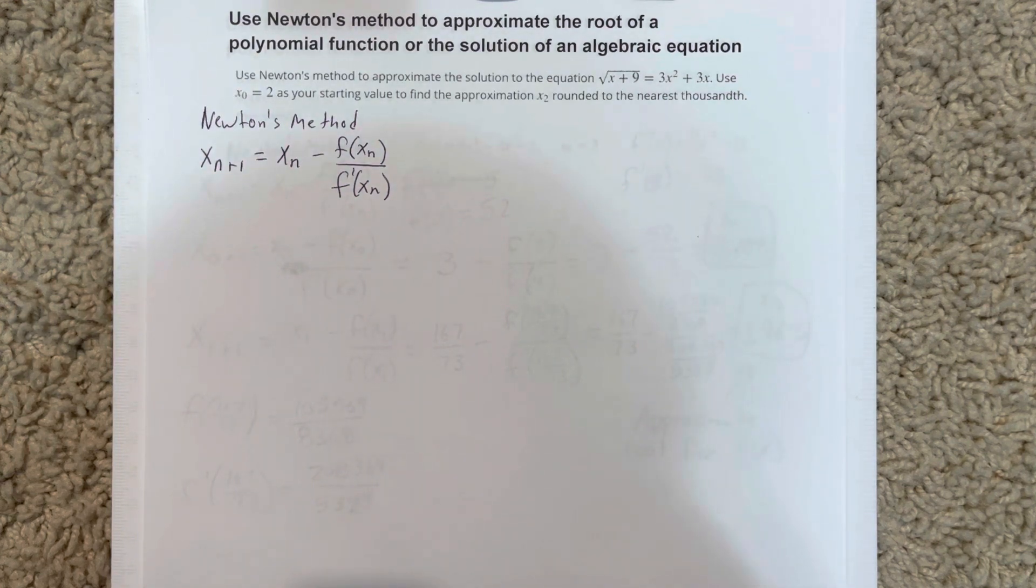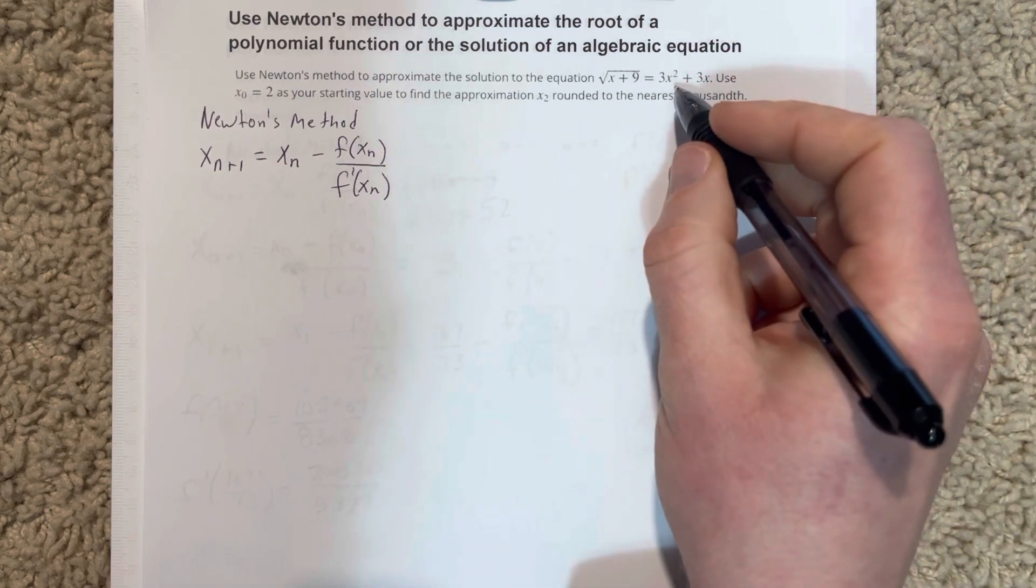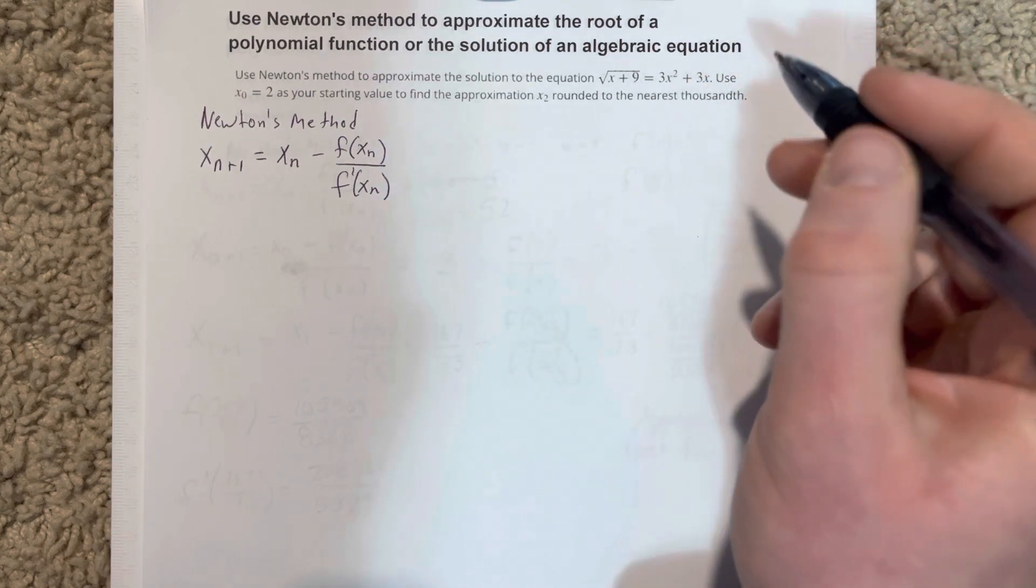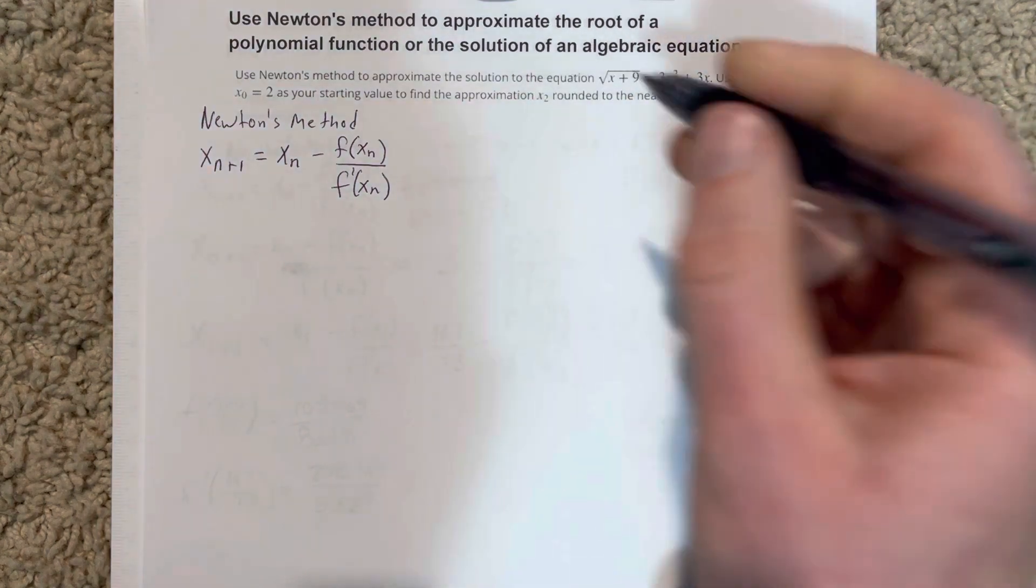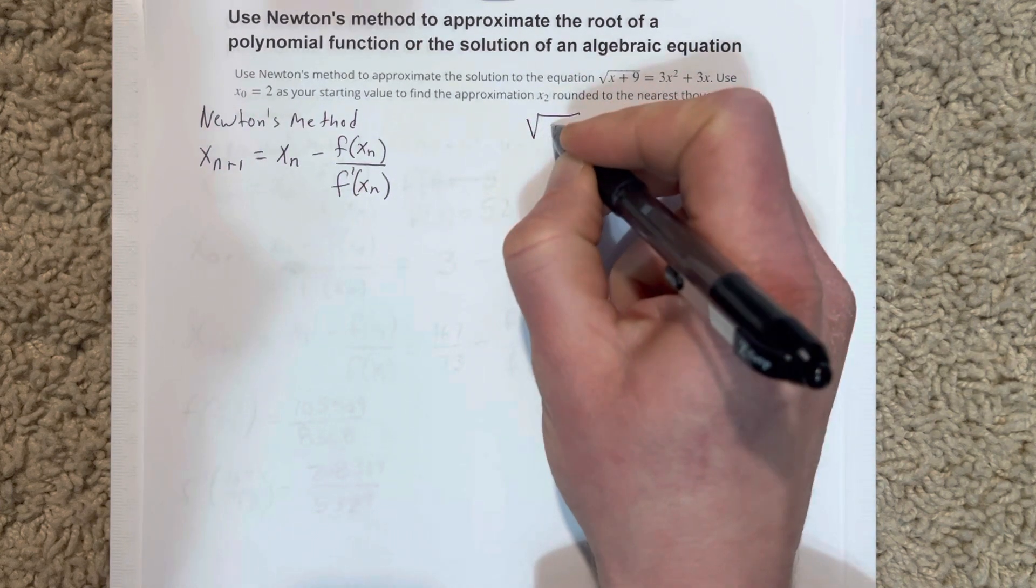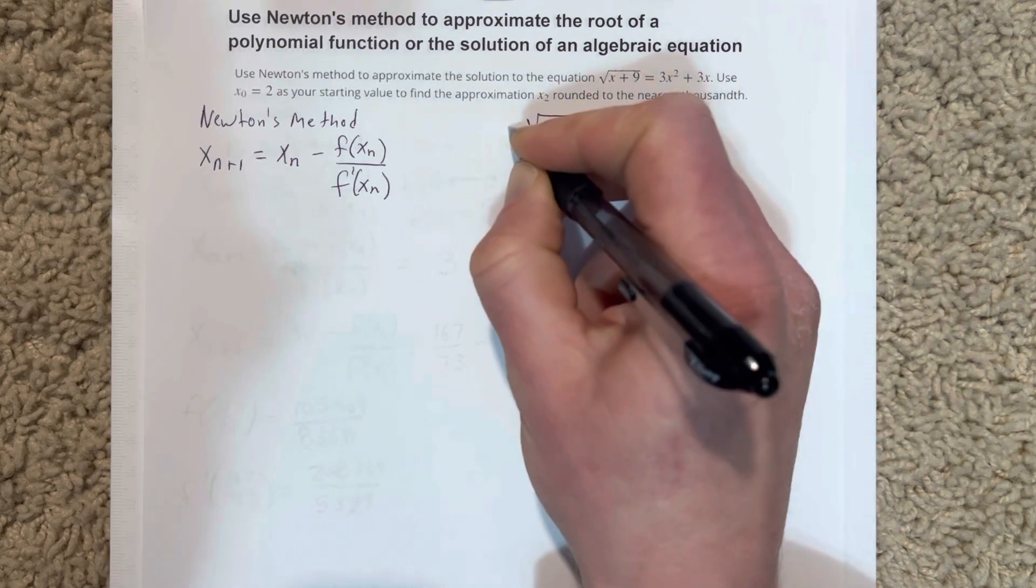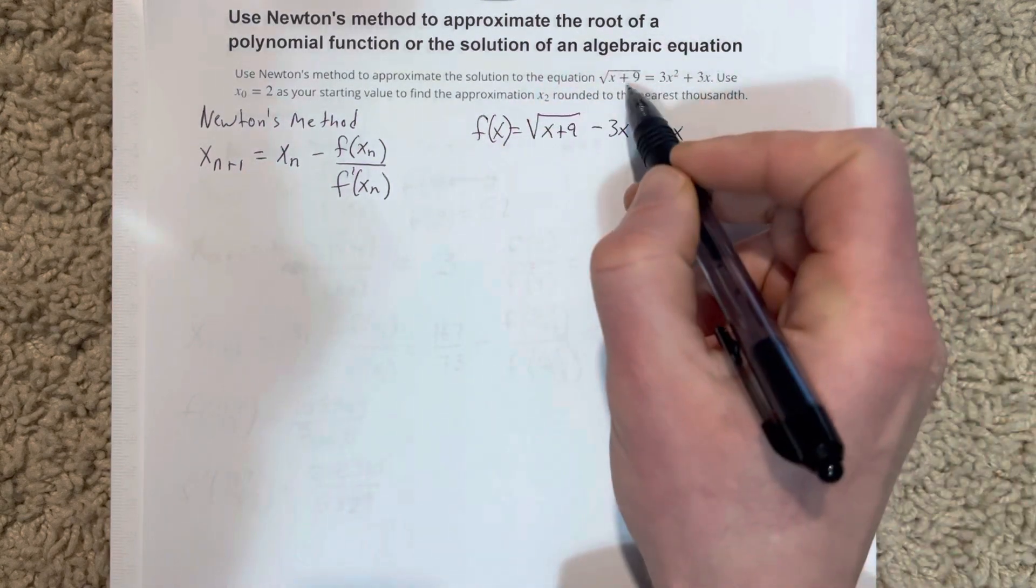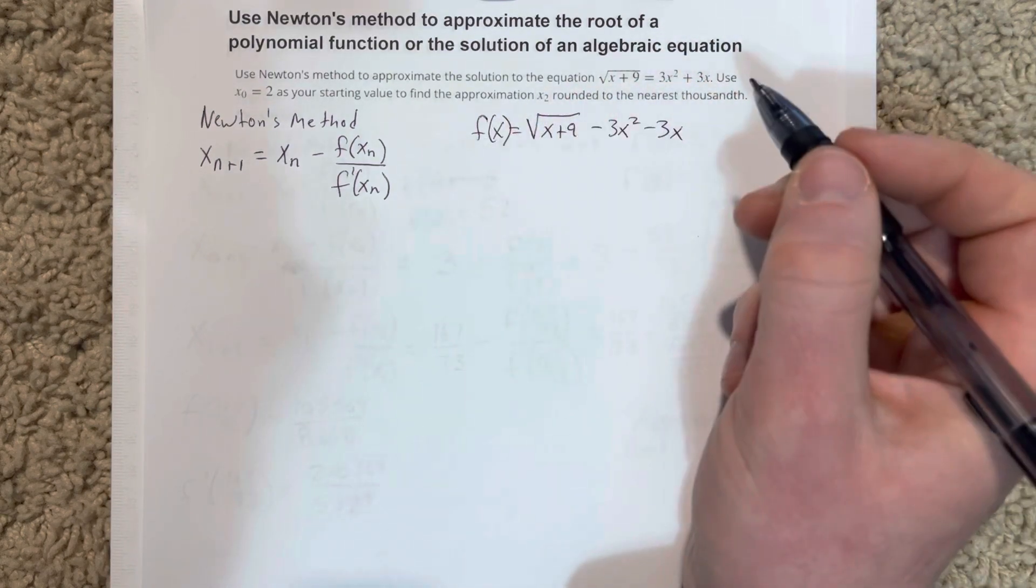What we want to do here is we want to find the derivative of this thing. I'm going to set this whole thing equal to 0 and then find the derivative. We can say that f of x equals root x plus 9 minus 3x squared minus 3x. We're just going to rewrite that equation and it's equal to 0, but we're just going to say that's f of x there because we can actually put any number there we want.